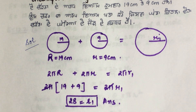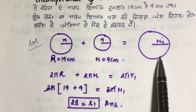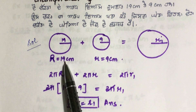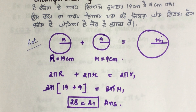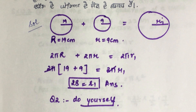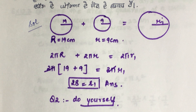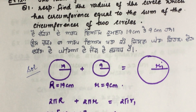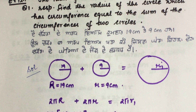Question number three is about area — the new circle formed will have an area equal to the sum of the areas of the two given circles. That is your question number two from Exercise 12.1, which you have to do yourself. If you can't solve it, comment below and I'll explain it or make a video.